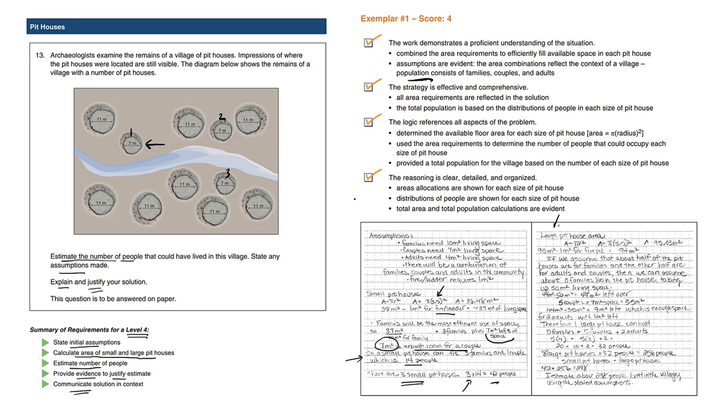Now there are also large pithouses, and there are many that have a diameter of 11 meters. We have the calculations similar to the previous example. We're also subtracting the fire pit, which is great - some details. Here is the assumption: we're assuming that about half of the pithouses are for families, and the other half are for adults and couples. Not everyone will have the same answer, but this person is writing some clear details about their calculations.